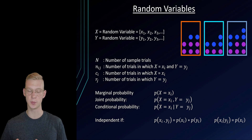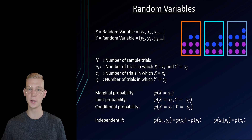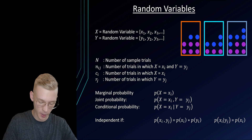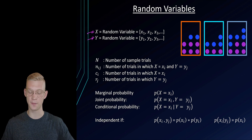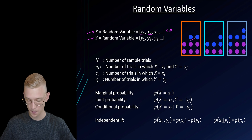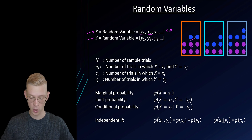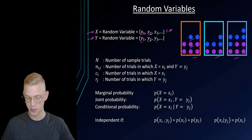Imagine we're having an experiment where we have three different boxes and we take marbles from each box multiple times, because we are interested in what are the probabilities of our marbles taken from the different boxes. First we have to define two random variables: the color of the box and the color of the marble. For the color of the marble we have x1 and x2 because we have blue and purple. For the color of our box we have y1, y2, and y3, which are orange, light blue, and dark blue.